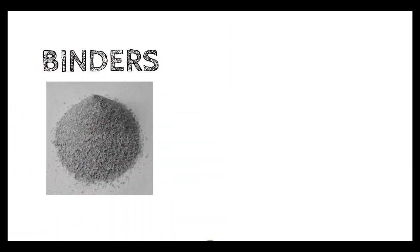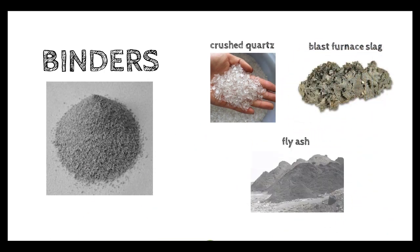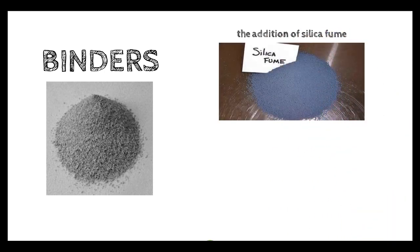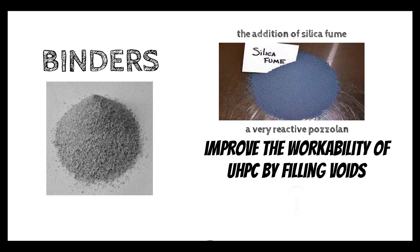Binders. A relatively high proportion of cement is used in UHPC mixtures, which can be replaced with crushed quartz, blast furnace slag, or fly ash. The addition of silica fume, a very reactive pozzolan used as a binder, can improve the workability of UHPC by filling voids between coarser particles owing to its much finer particle size and spherical shape.